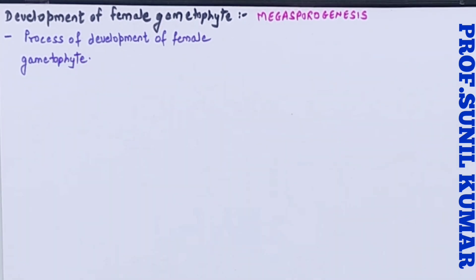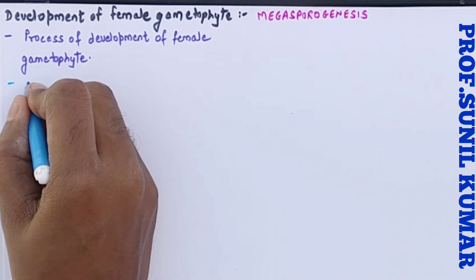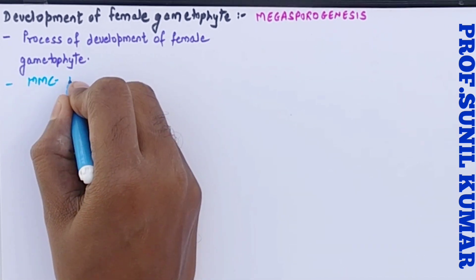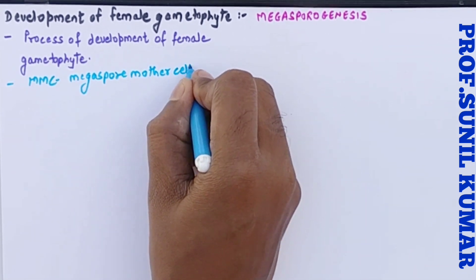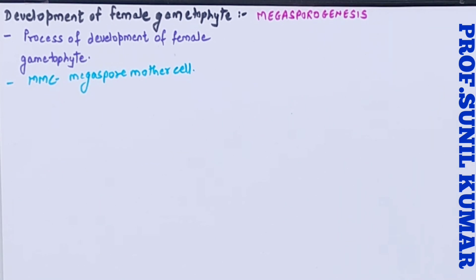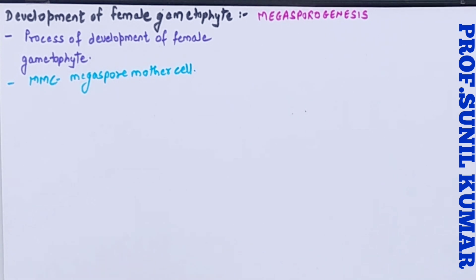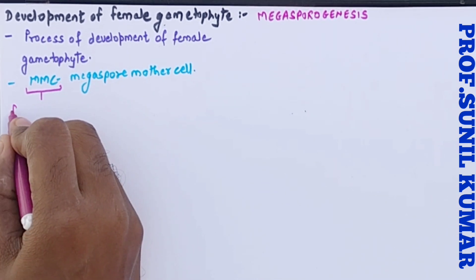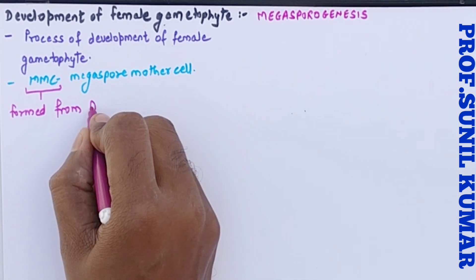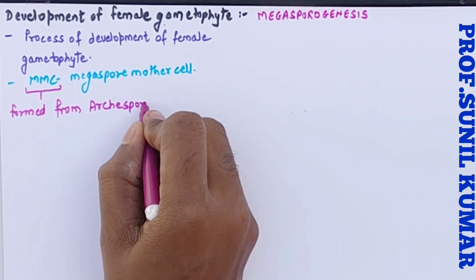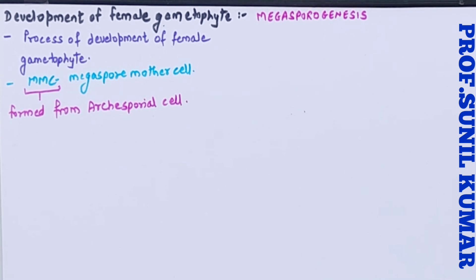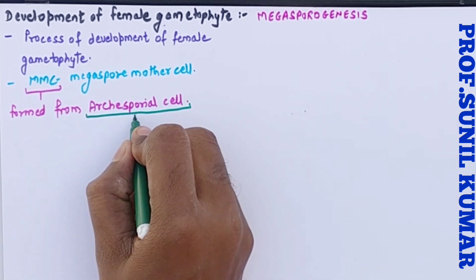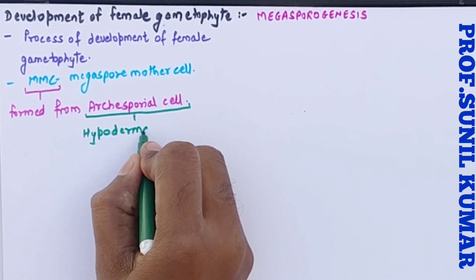When we talk about the female gametophyte, let's first understand that the female part of the flower is the gynoecium, which consists of three parts: stigma, style, and ovary. Inside the ovary there will be an ovule, and that ovule is nothing but the mega spore. The development starts from MMC — the mega spore mother cell — which is formed from the archesporial cell.